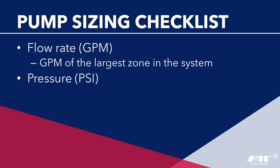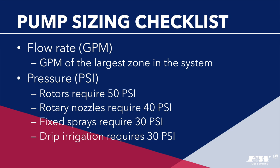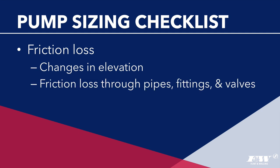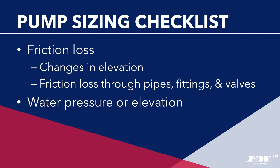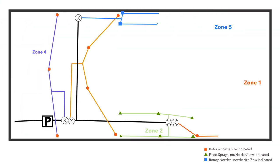For the flow rate, you need the GPM of the largest zone, or the maximum flow rate the system will use at any one time. For the pressure, you need the pressure required at the sprinklers — in residential systems, rotors typically require 50 PSI, rotary nozzled sprinklers 40 PSI, fixed sprays 30 PSI, and drip irrigation zones 30 PSI. You'll also need the friction loss between the pump and the sprinkler with the greatest pressure loss, including elevation changes to the highest point, friction loss in pipes, fittings, and valves, and the pressure or elevation of the water coming into the pump (city pressure or suction lift).